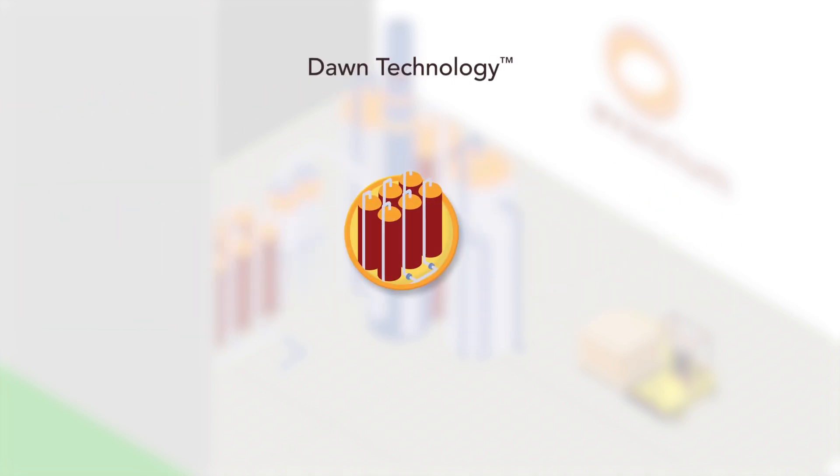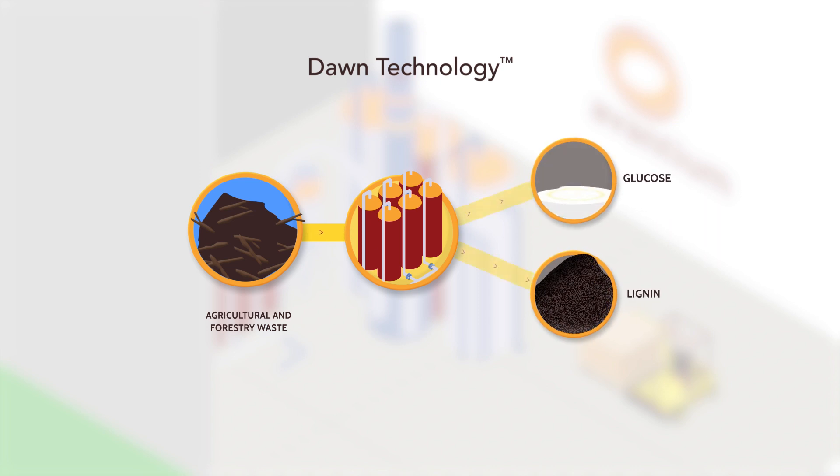DAWN technology converts agricultural and forestry waste to high-value chemicals and materials, replacing petroleum with industrial sugar to create bio-based products.